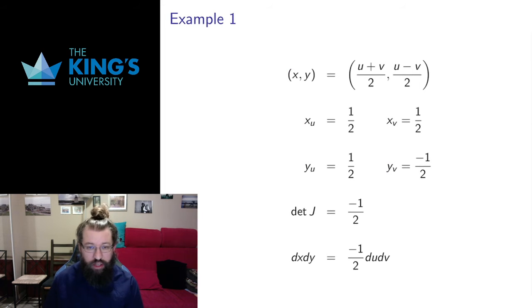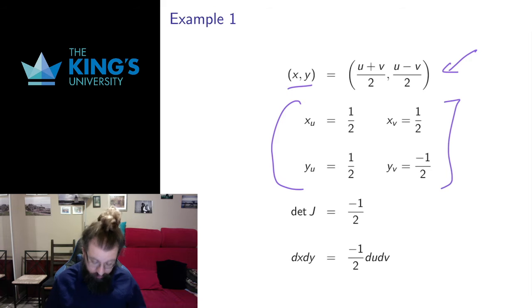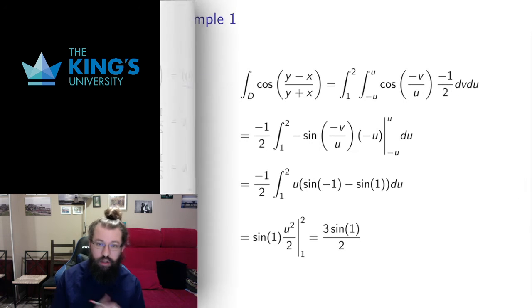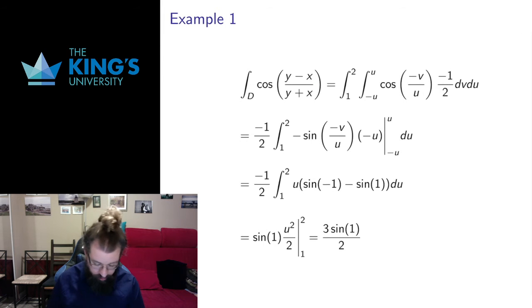All right, that tells me how the bounds change. Now I need to know the Jacobian. So I need to know how the integrand changes, I need to know how the bounds change, I need to know what the Jacobian is. The Jacobian is in the setup where the old variables are the output. I take the four partial derivatives, I put them in a matrix, I find the determinant of that matrix. In this case it's going to give me negative 1 half. So that tells me how to replace dx dy. I replace it with negative 1 half du dv. And now I can do all of the changes.